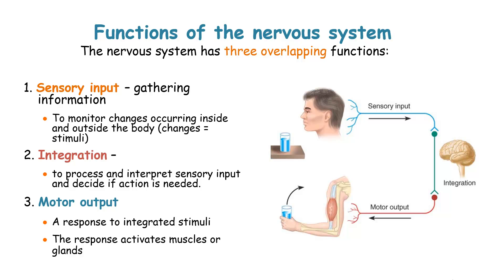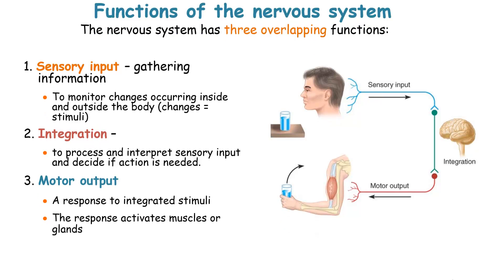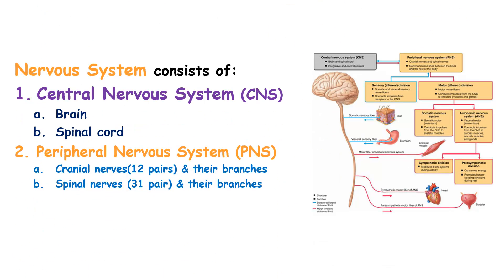The motor output is usually a response to the integrated stimuli, and this response activates muscles or secretory glands. The nervous system comprises the central nervous system — which includes the brain and the spinal cord — and the peripheral nervous system, which houses the 12 pairs of cranial nerves and their branches, and the 31 pairs of spinal nerves and their branches.